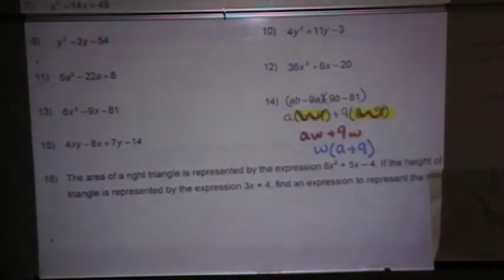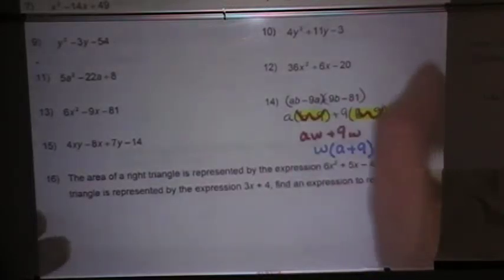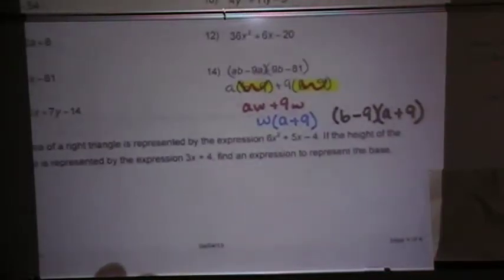And now I can replace w with what it was, which was b minus 9. So my final answer is b minus 9, a plus 9. That's my final answer.